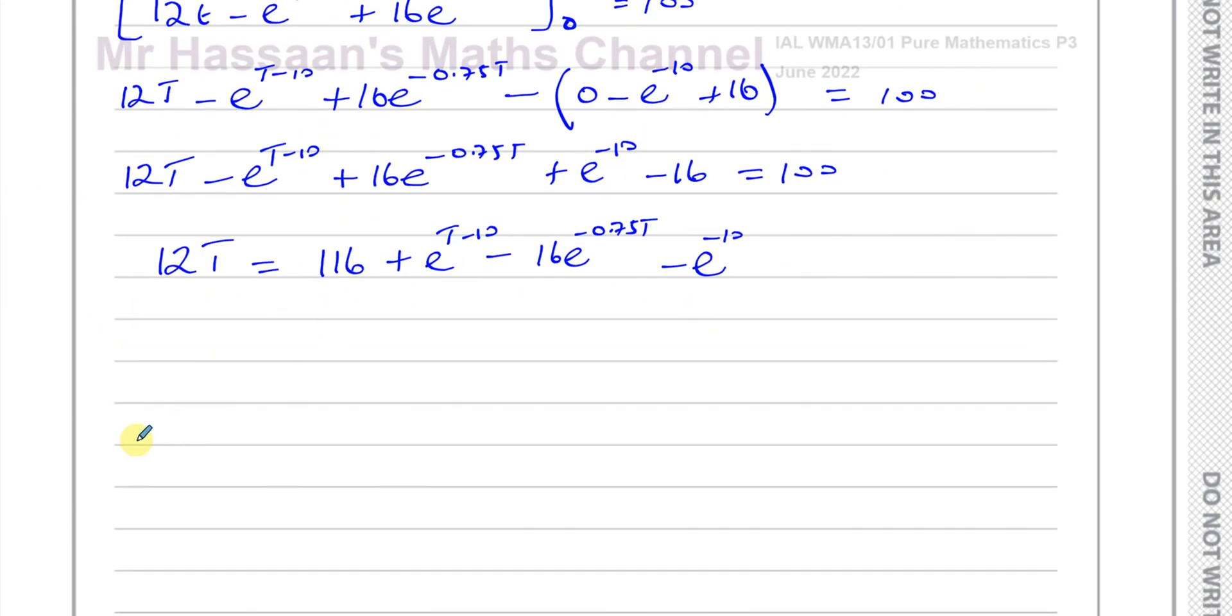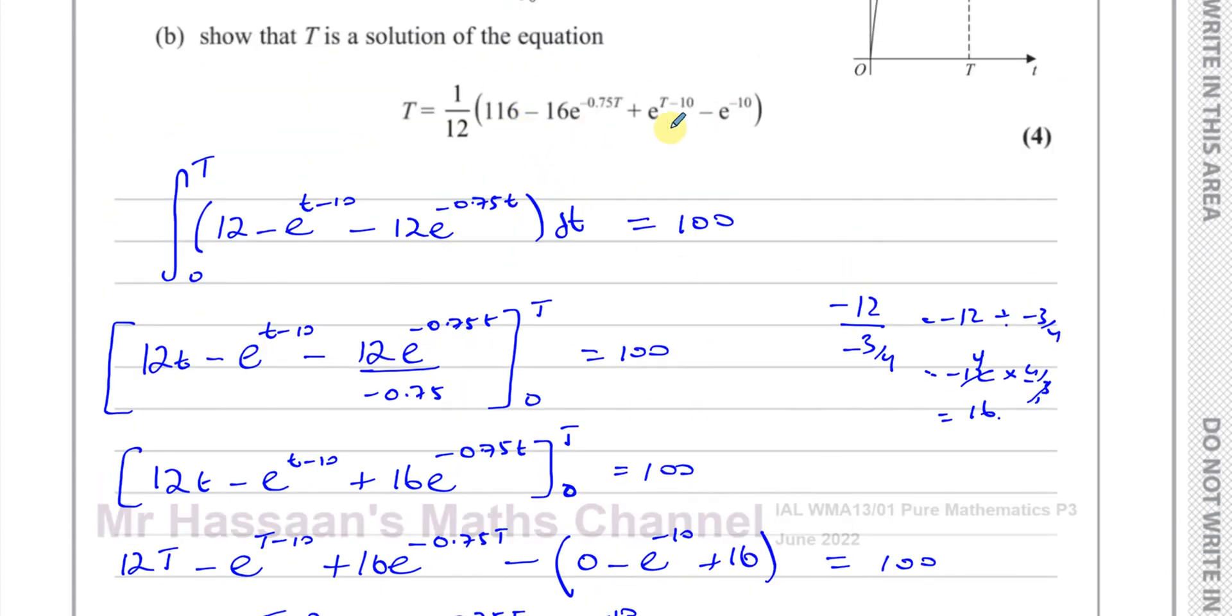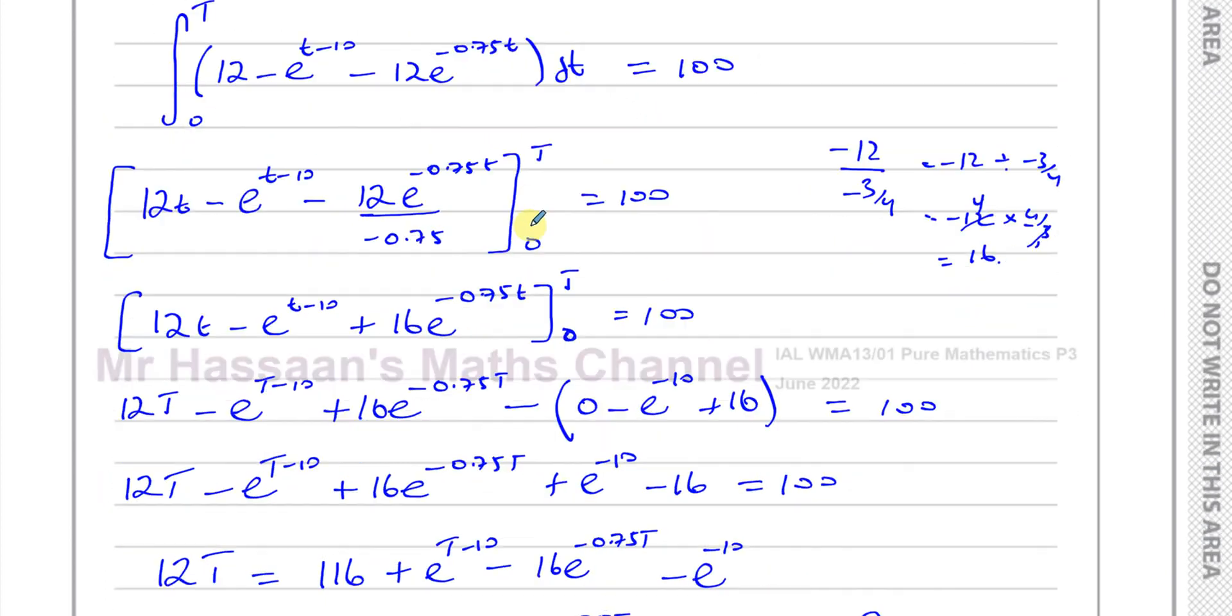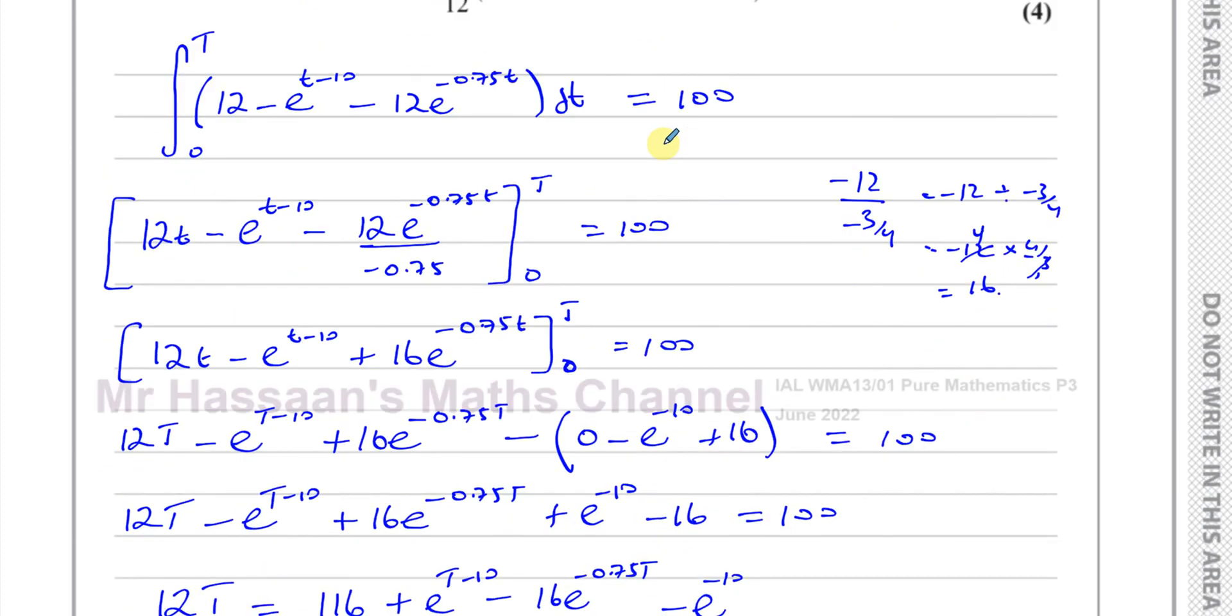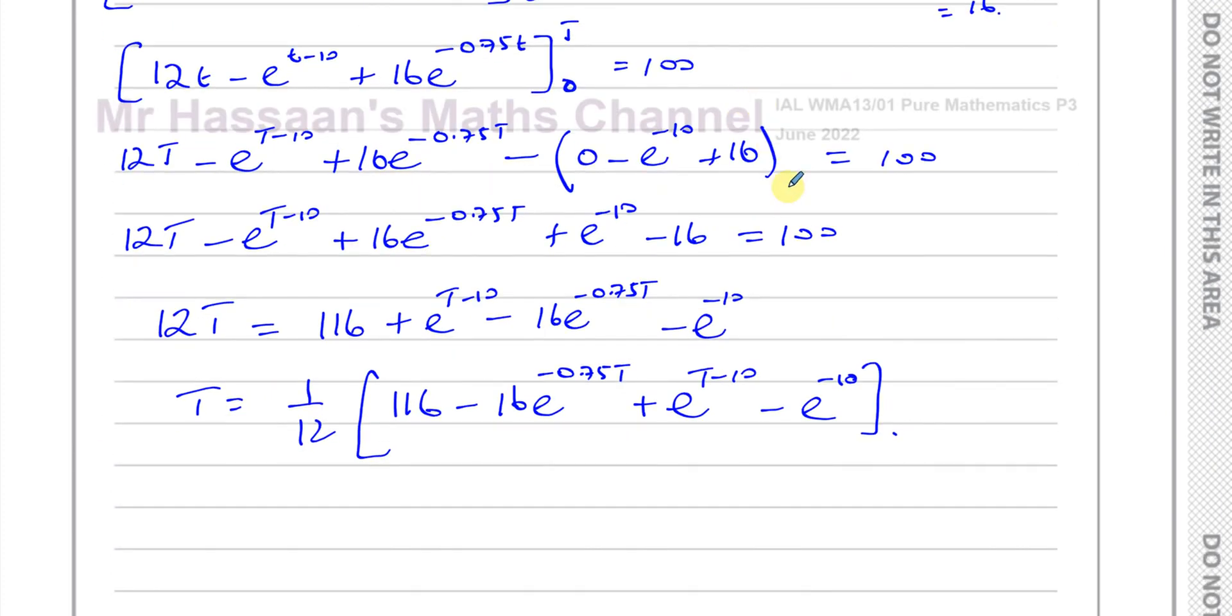I will just write them in the same way that they've given it to us: 116 minus 16e to the power of negative 0.75t plus e to the power of t minus 10 minus e to the power of minus 10. And there's our answer. 116 minus 16e to the power of negative 0.75t plus e to the power of t minus 10 minus e to the power of minus 10.